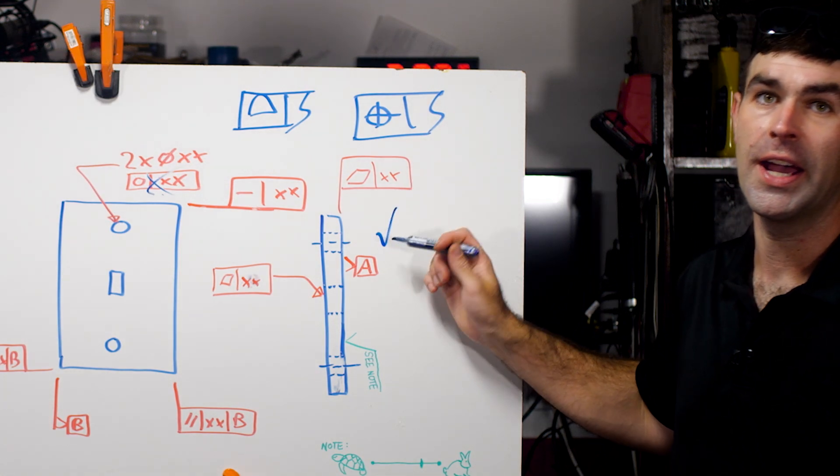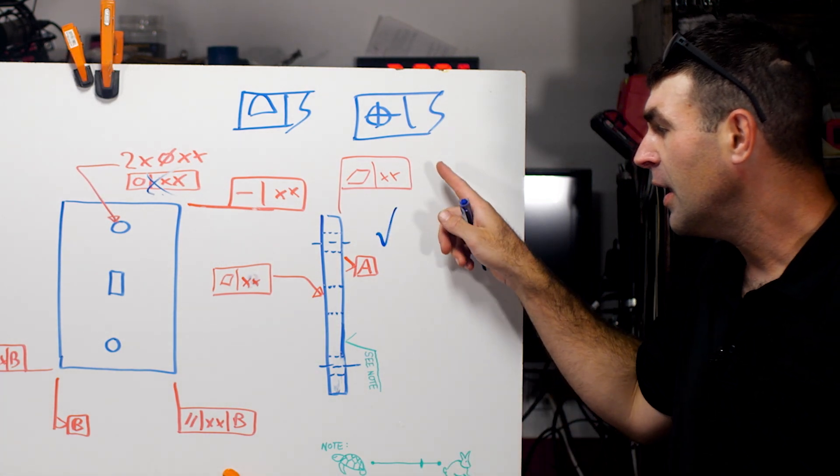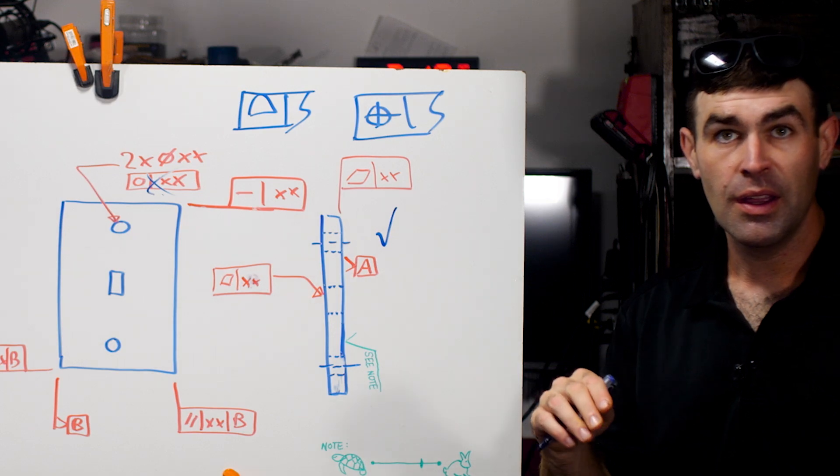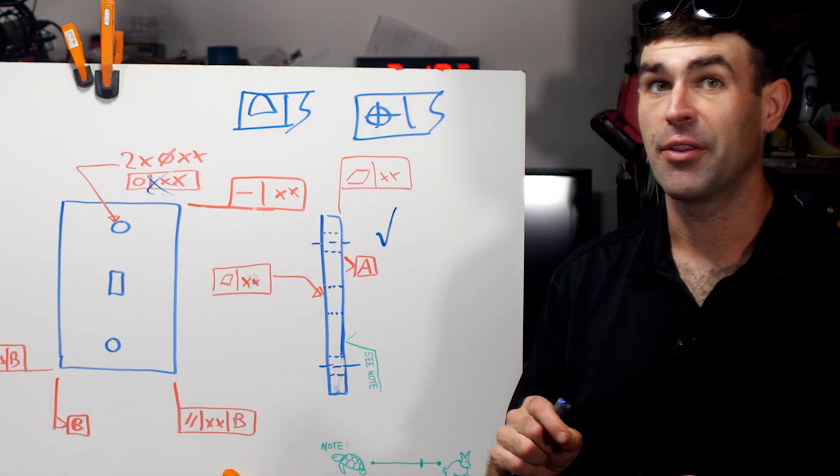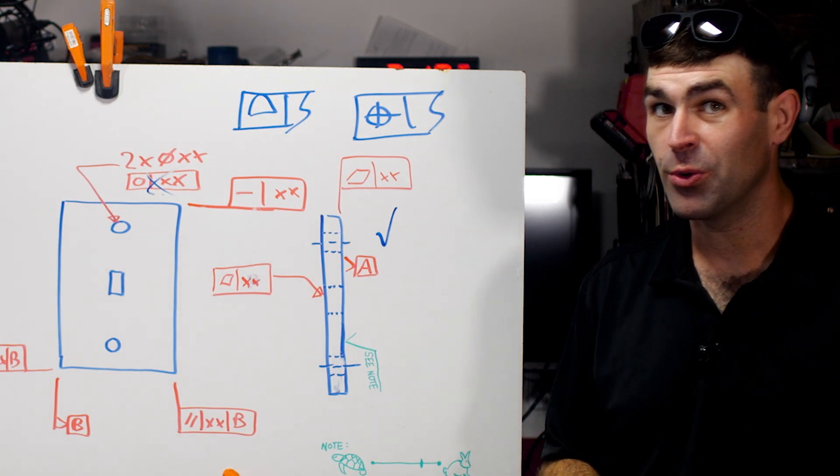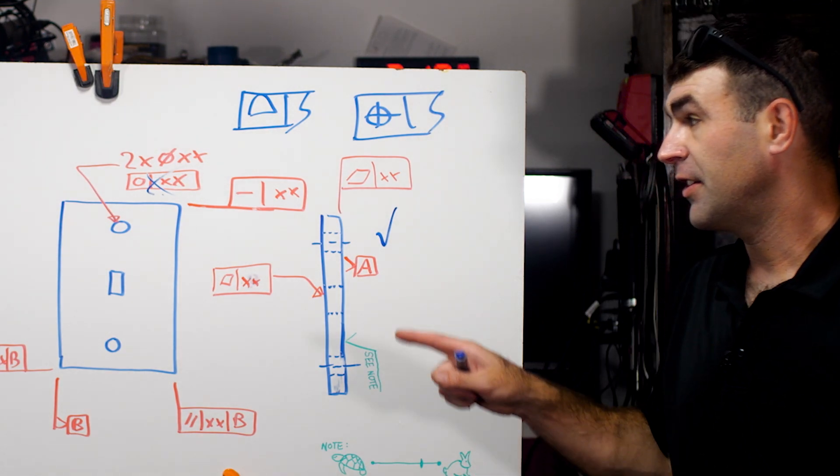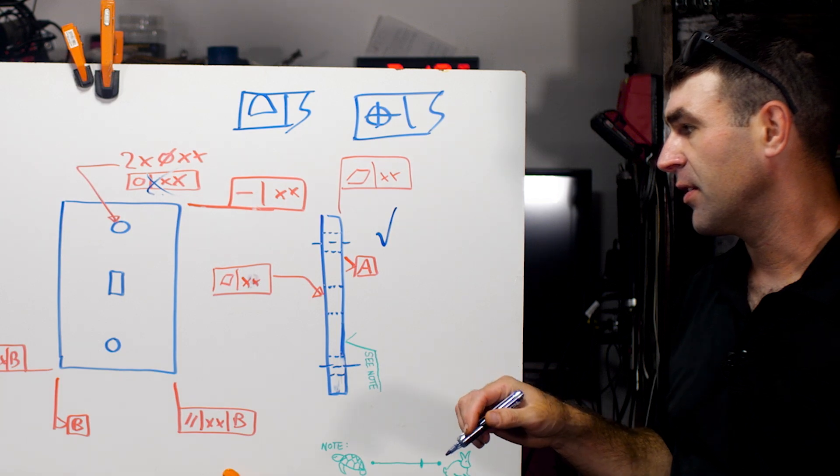This flatness, this is okay. That's legit. You can apply flatness to a primary datum feature, especially if it's a surface plane. Now, the argument against that, you could use rule number one to control that plane as well. It doesn't have to have a flatness necessarily.